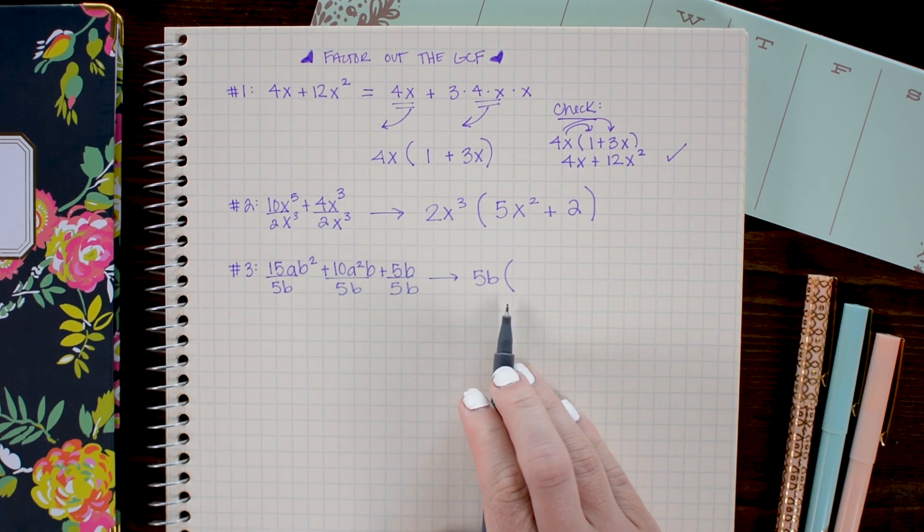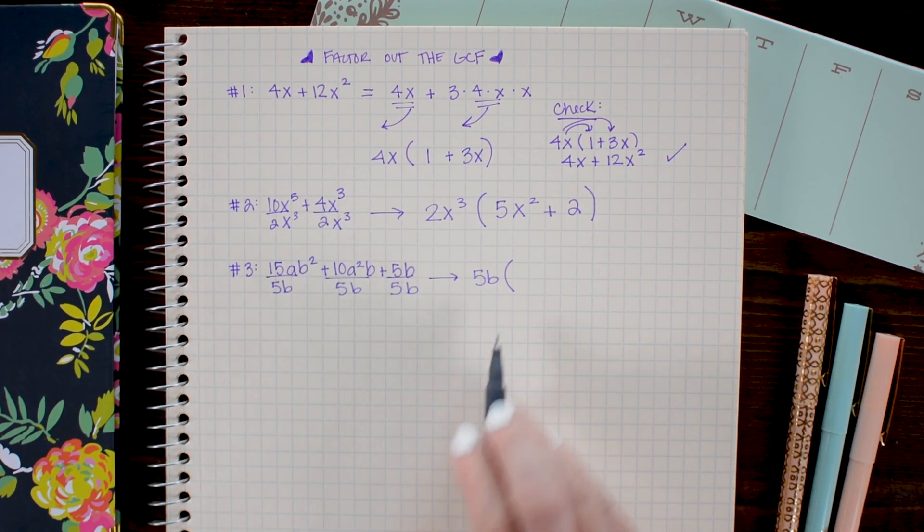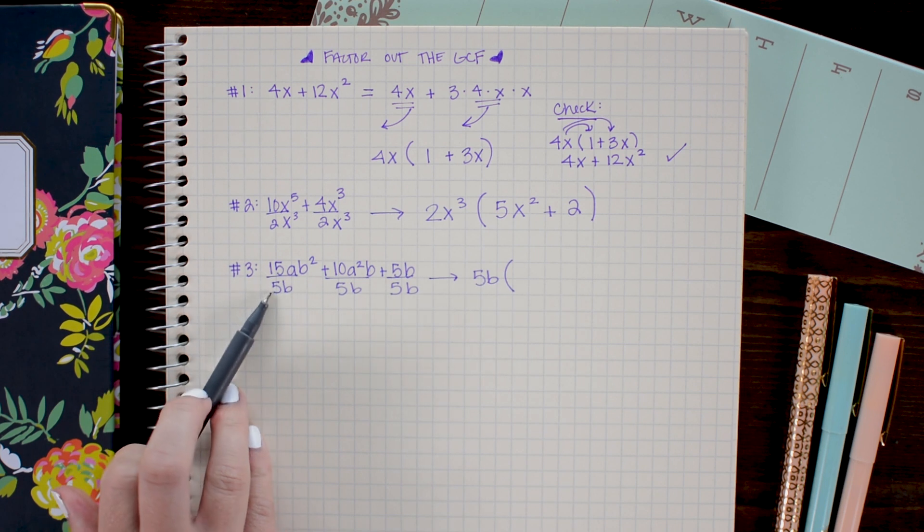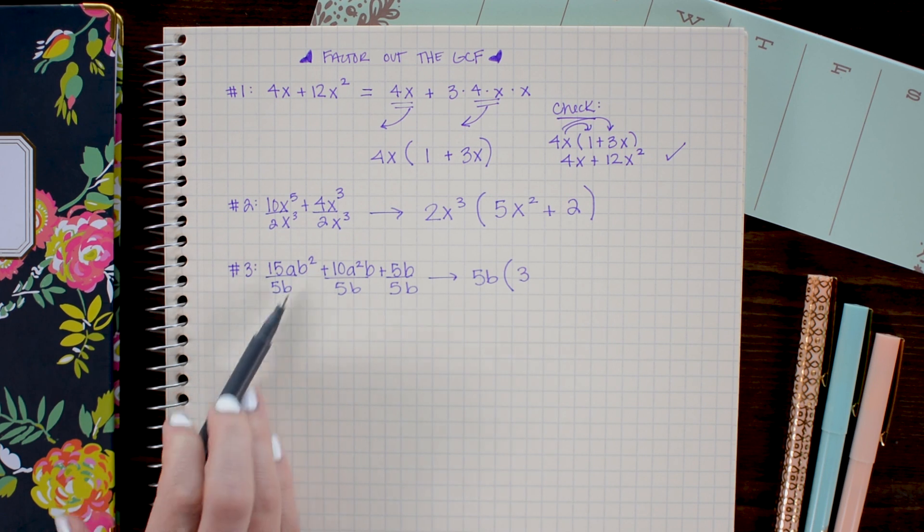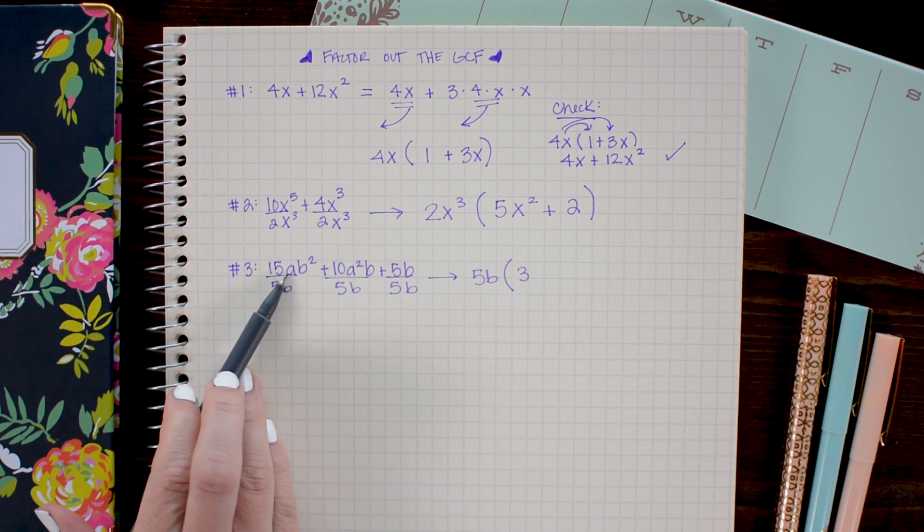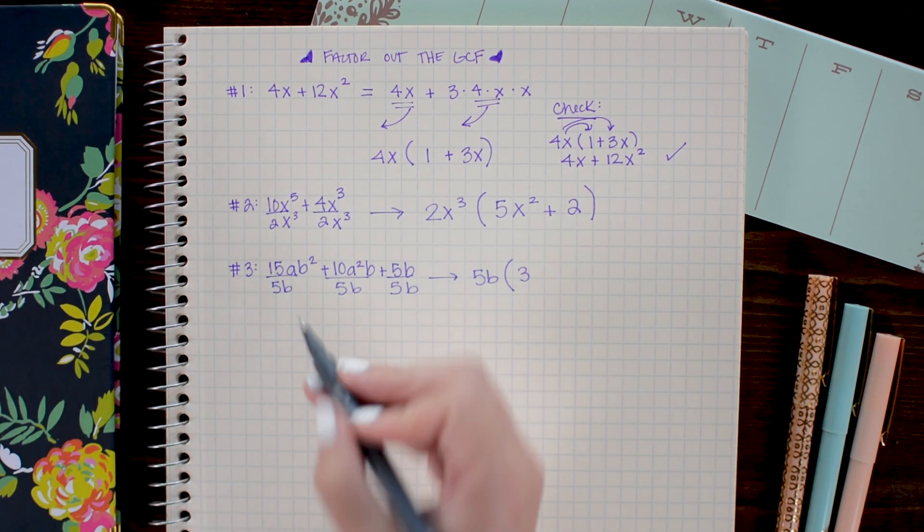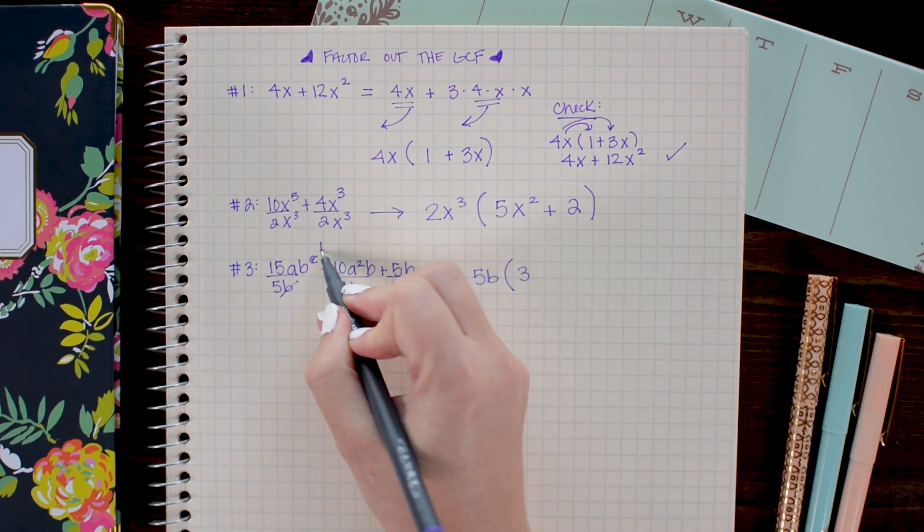And in parenthesis I'm going to write the resulting division. So here I have 15 divided by 5 is 3, ab squared divided by b leaves me with just ab since this b cancels with one of these.